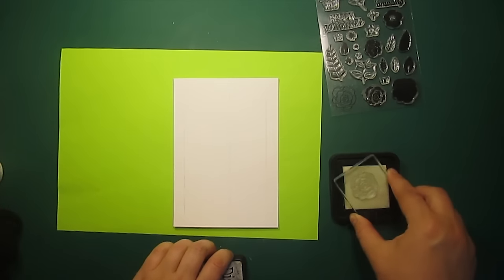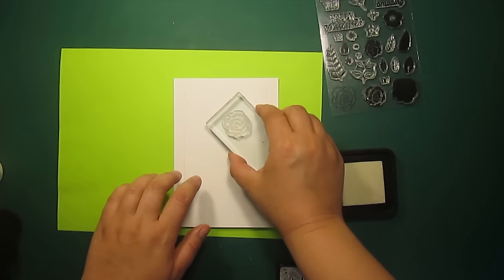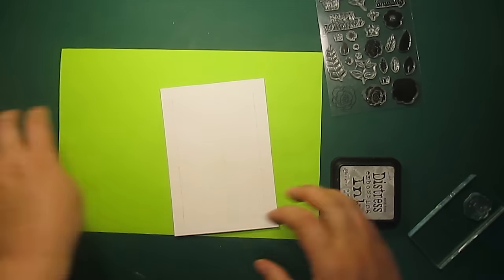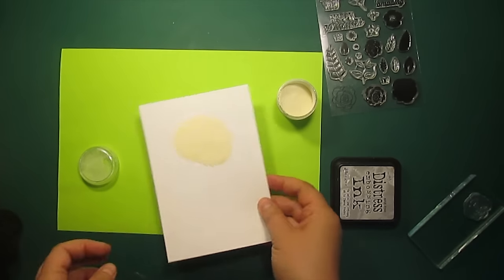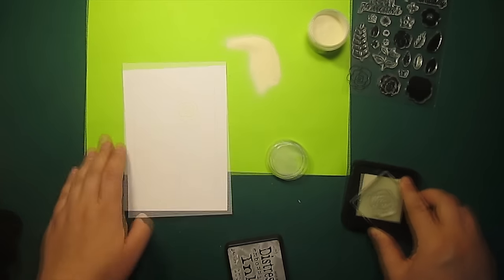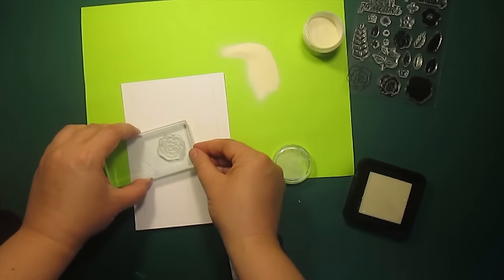I will be stamping the images one by one with the embossing ink. I'm applying some white powder just to be able to see where the image is. Then I will know where to stamp my next image.